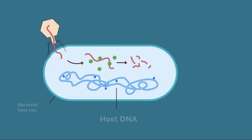Restriction enzymes were identified in bacteria in the 1970s. There is a microscopic war continually going on that most humans are unaware of — the battle for life between bacteriophage and bacteria. Bacteriophage are small viruses that infect bacteria. After injecting its DNA into the host bacterium, the bacteriophage takes control of the host cell's replication machinery, which could be devastating for the bacteria. However, bacteria have evolved mechanisms to protect themselves.